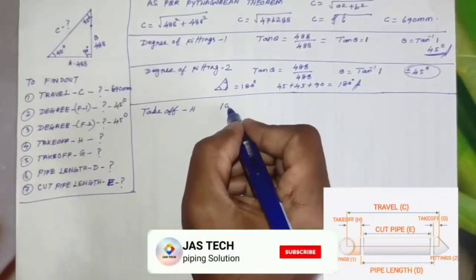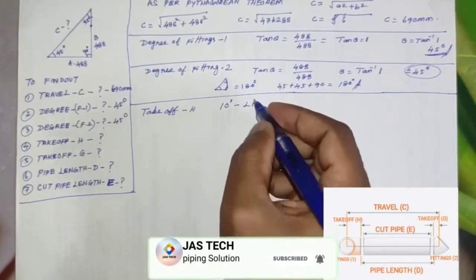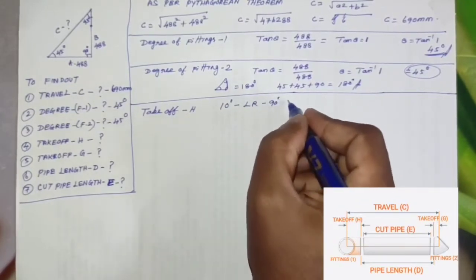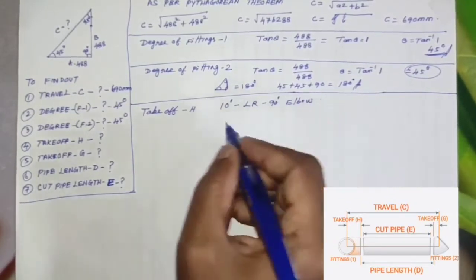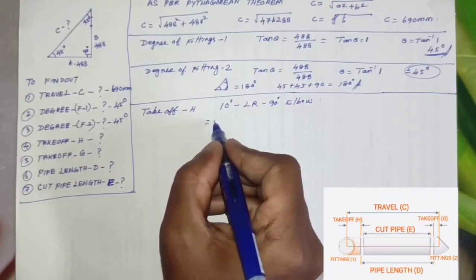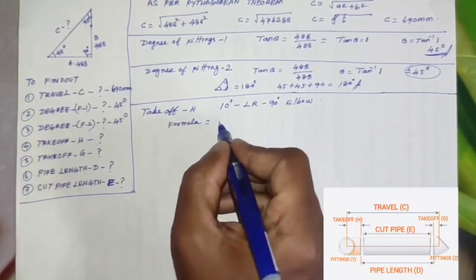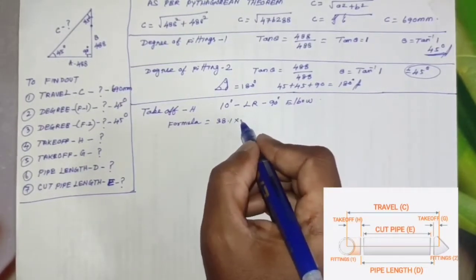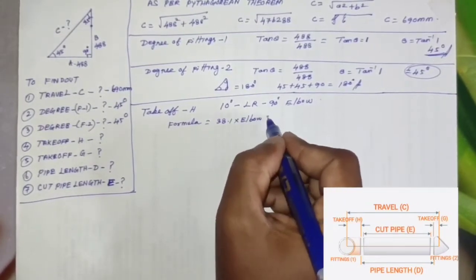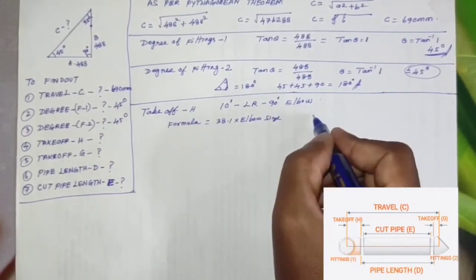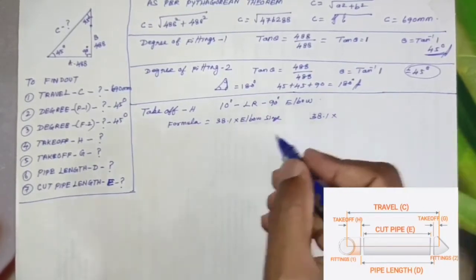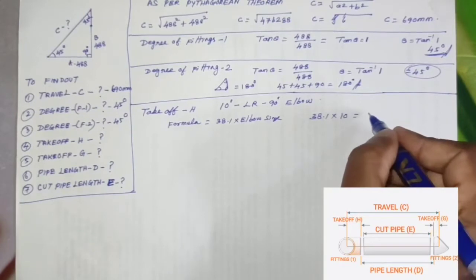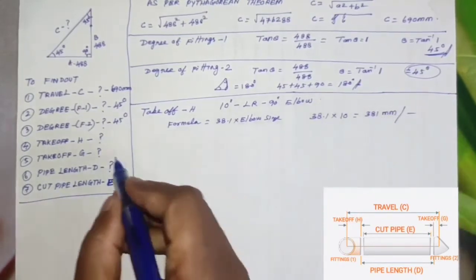As per our drawing, our pipe size is 10 inch. So long radius 10 inch, 90-degree elbow. Formula: 38.1 times elbow size, so 38.1 times 10 equals 381 mm.